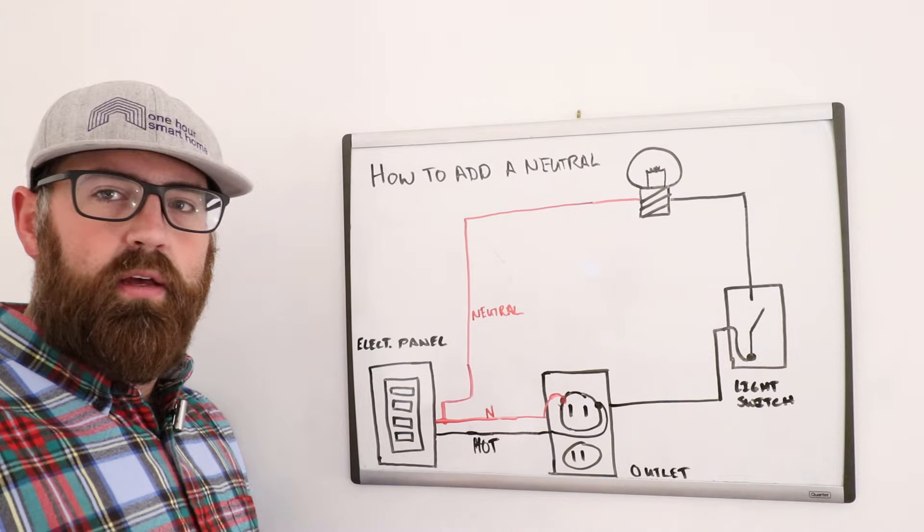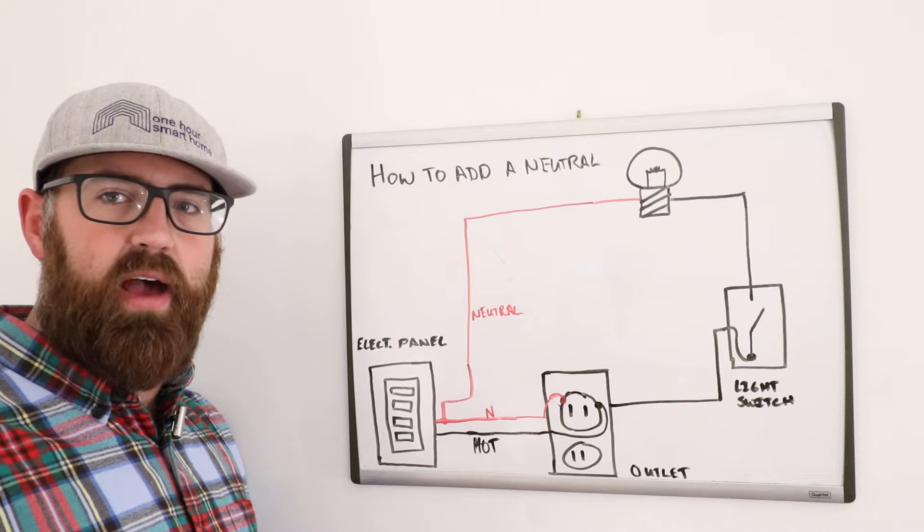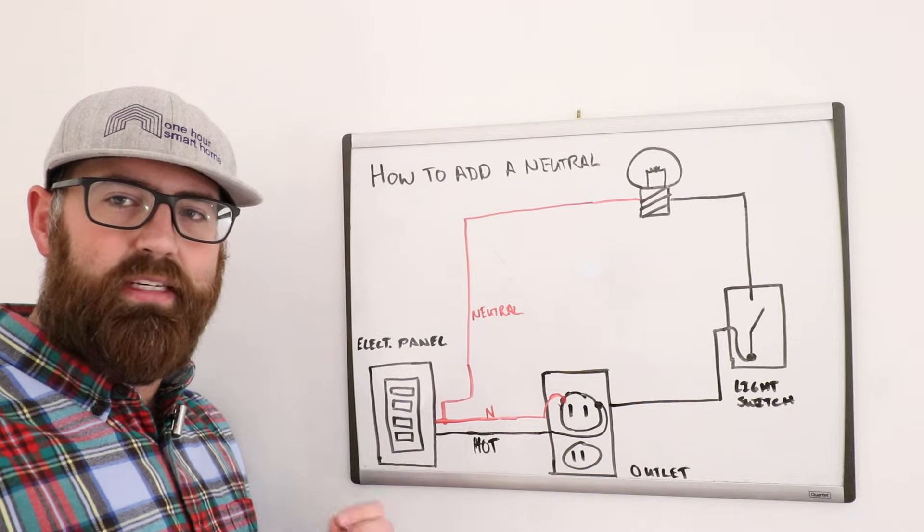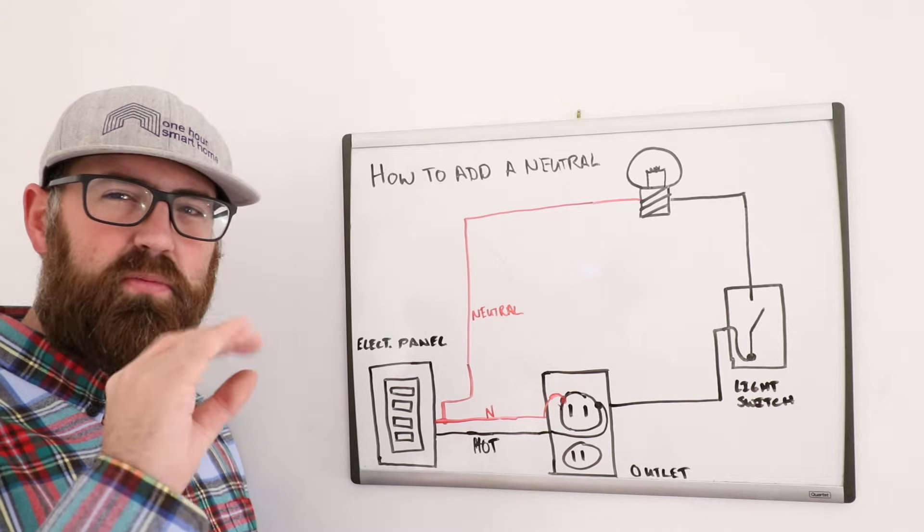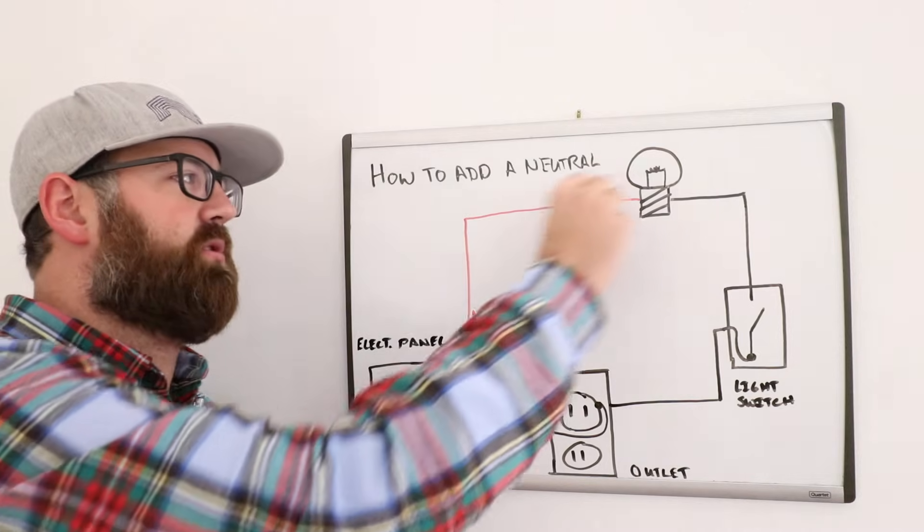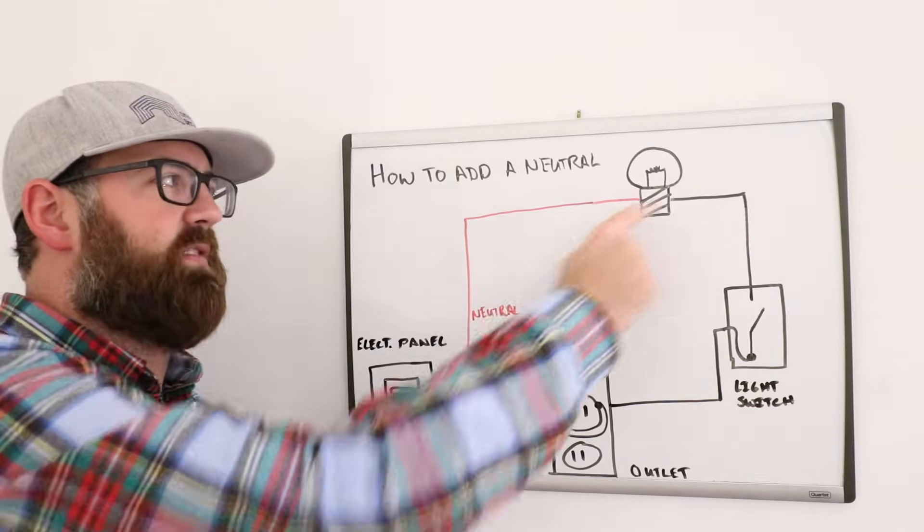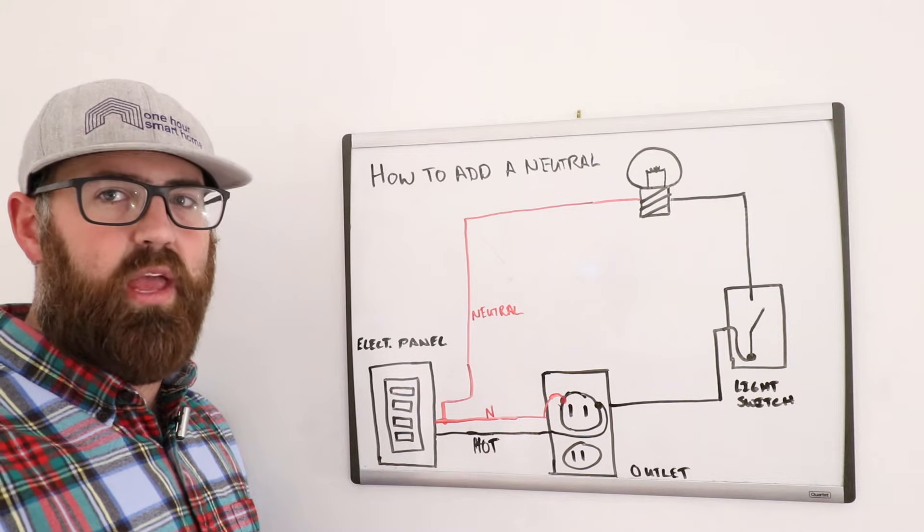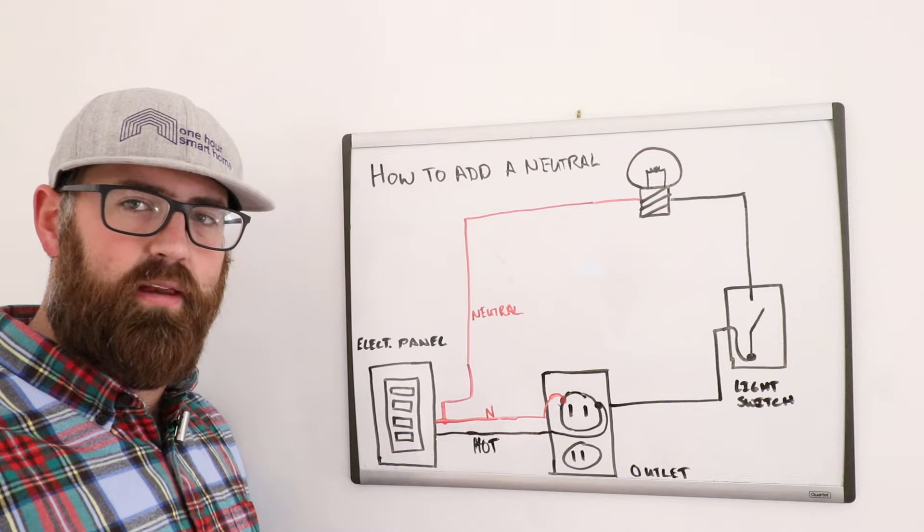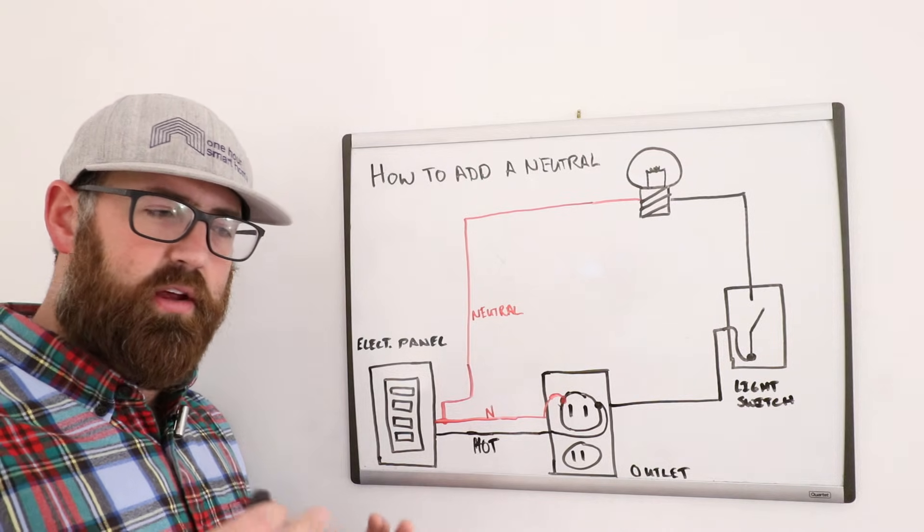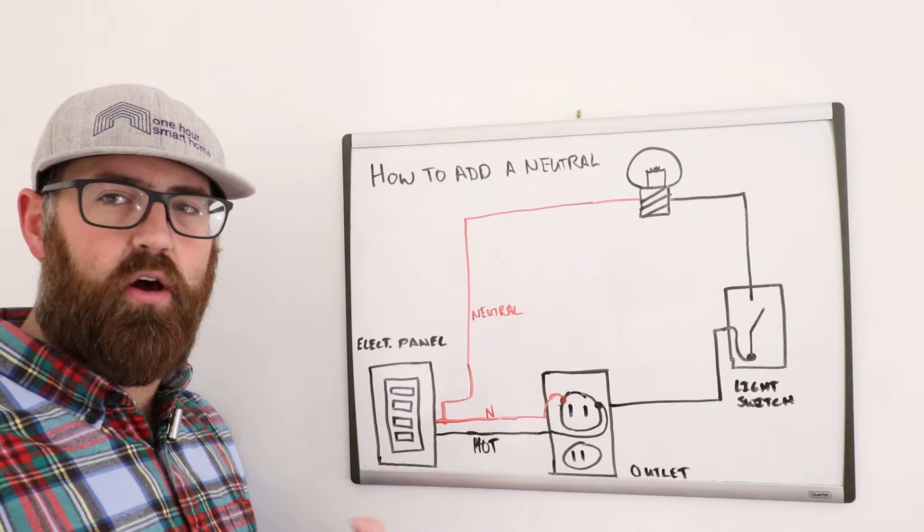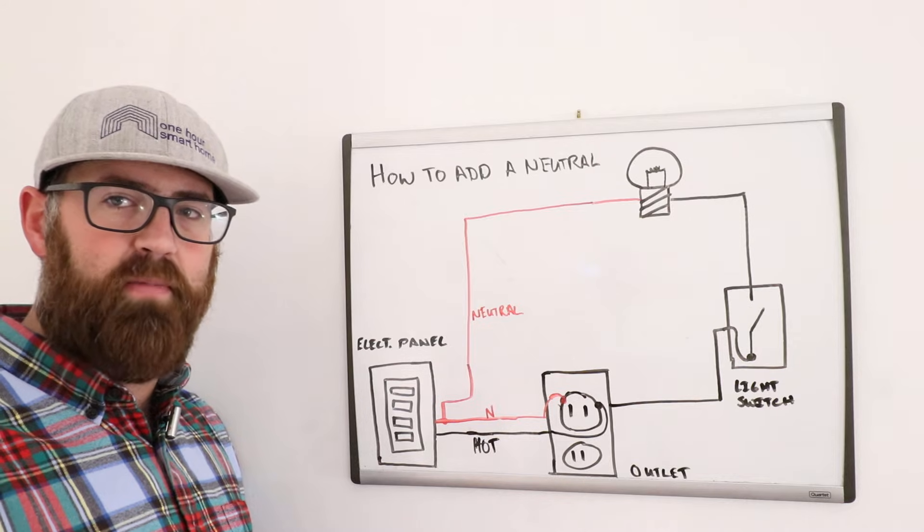The reason that the Lutron Caseta light switches don't have a neutral wire requirement is because they essentially dim the lighting switch to a super tiny amount of electricity. And that electricity still goes through the circuit, but it's not enough to activate the light. So it is still able to power the Wi-Fi chip within the Lutron Caseta switch. And that works because Lutron doesn't technically use Wi-Fi.